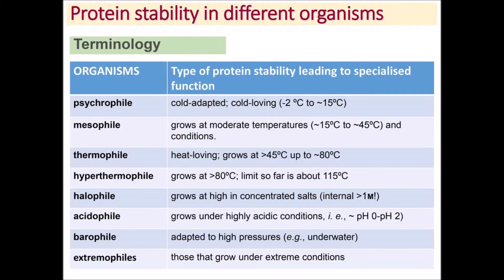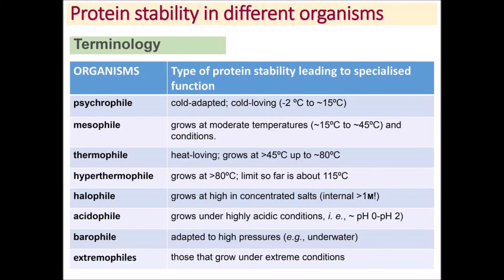Protein stability in different organisms: based on the type of protein stability leading to specialized function, organisms fall under categories such as psychrophiles, mesophiles, thermophiles, hyperthermophiles, halophiles, acidophiles, barophiles, and other extremophiles.